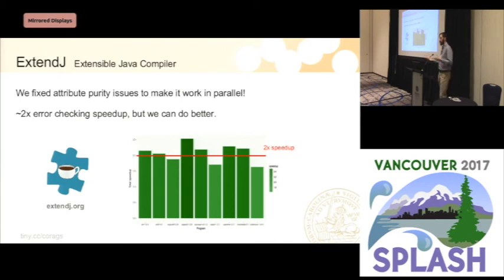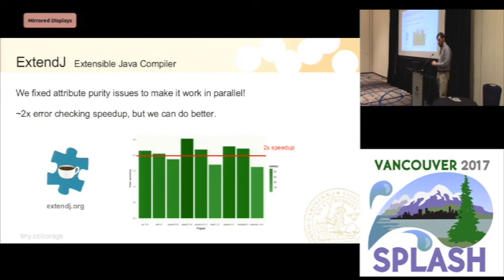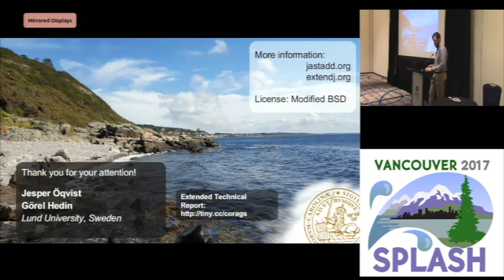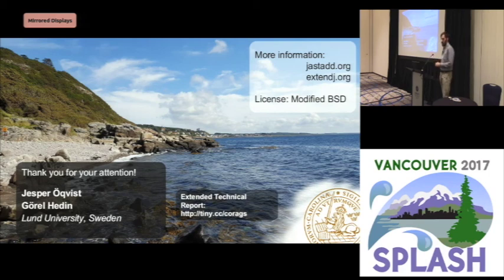If you write a compiler from scratch intended to run in parallel, you could potentially improve performance even more, since this compiler was originally not intended to compile in parallel. That was all I wanted to show — you can take a look at our technical report which has correctness proofs and more information. Thank you so much for listening.